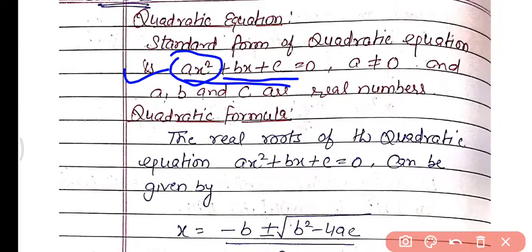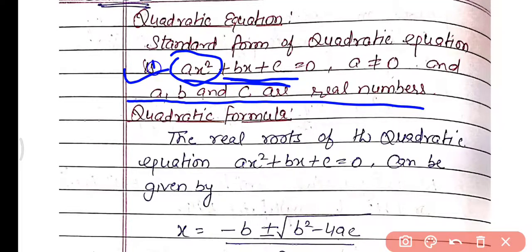Otherwise if it is 0, we will not get a quadratic equation. Here a, b, and c are the real numbers. So a is the coefficient of x², b is the coefficient of x, and c is the constant term. All are real numbers — they may be positive, negative, or 0, but a cannot be equal to 0.